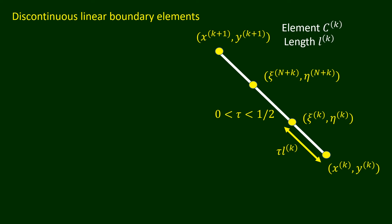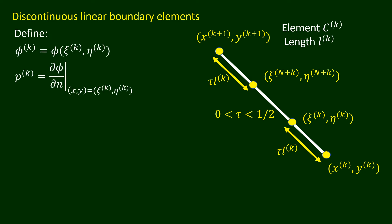We define phi_k and p_k to be the values of phi and del phi over del n, respectively, at the point (xi_k, eta_k).